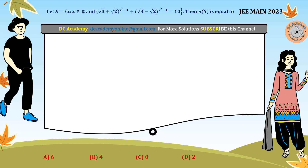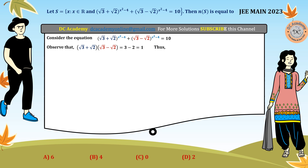To solve this problem, first we consider the equation. We can see that we have (√3 + √2) and (√3 − √2). An important observation: if we multiply these two using the identity (a + b)(a − b) = a² − b², we get 3 − 2 = 1. Therefore these two terms are reciprocals of each other, so √3 + √2 = 1 / (√3 − √2). This is a very important observation.